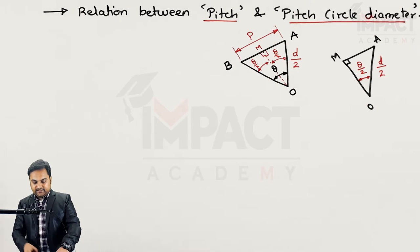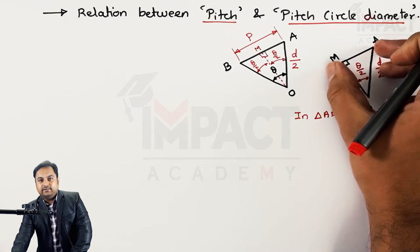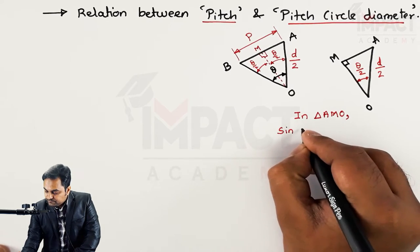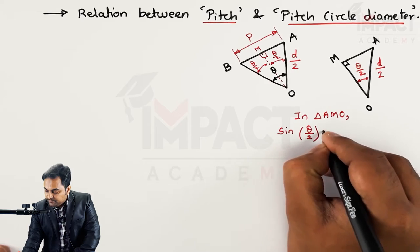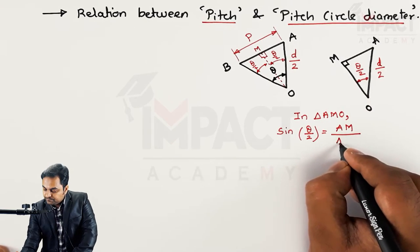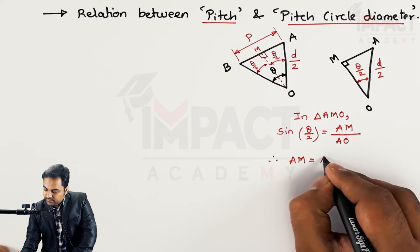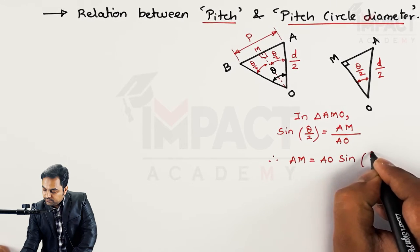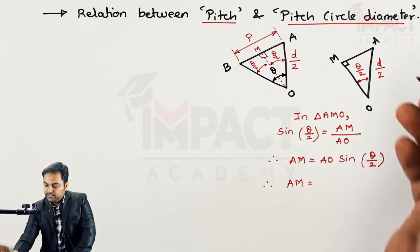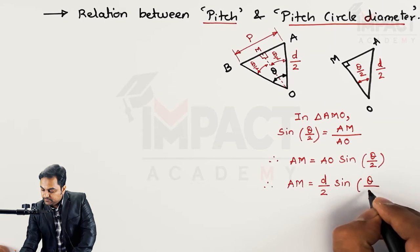In triangle AMO, AM is opposite to the angle theta/2, so we use the sine formula: sin(theta/2) = AM / AO, where AO is the hypotenuse. Therefore, AM = AO × sin(theta/2). Since AO = D/2, we get AM = (D/2) × sin(theta/2).